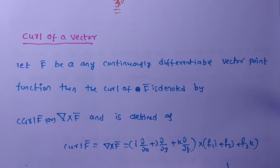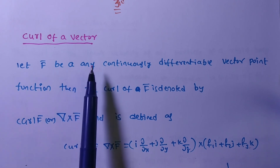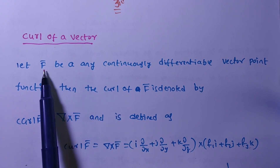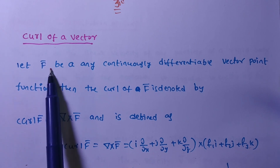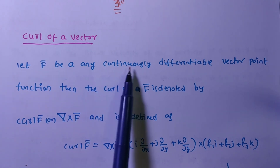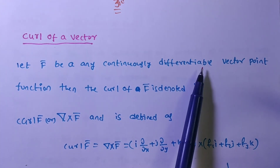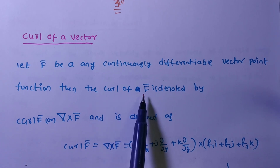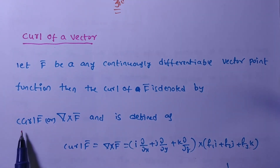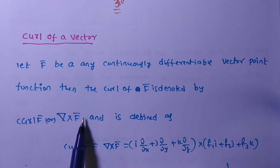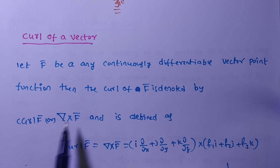Hi friends. Now we are discussing curl of a vector in this video. If f̄ be a vector point function and it is continuously differentiable, then curl of f̄ we are denoting with curl f̄ or del cross f̄ symbolically.